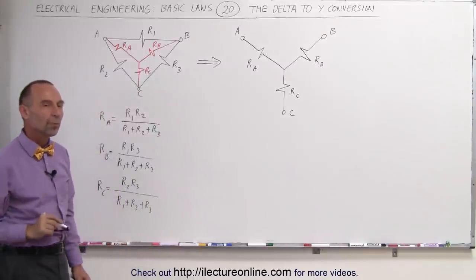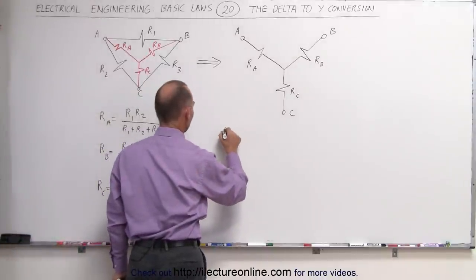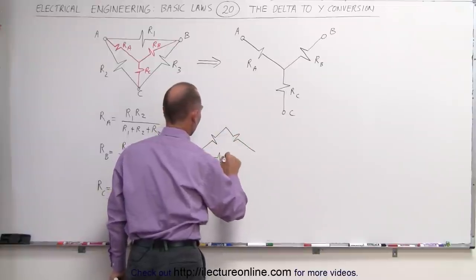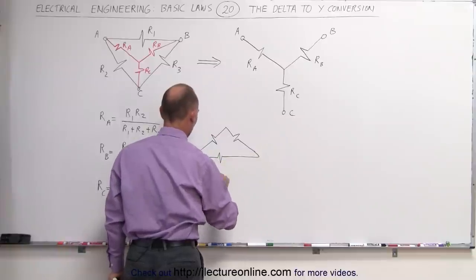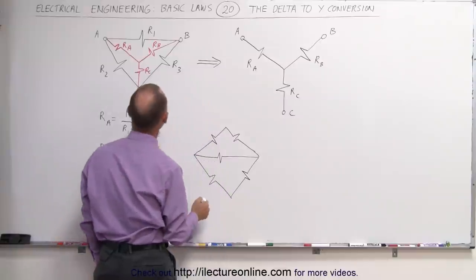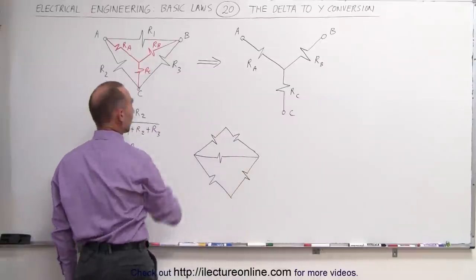The reason why this is so powerful is look at the following example. Let's say that we have a bridge circuit that looks like this. We have a resistor like this, we have a resistor this way, we have a resistor going in this direction, then we have one more in this direction and one more like this. Notice we can take perhaps the bottom part of the circuit and realize it looks just like what we have over here.